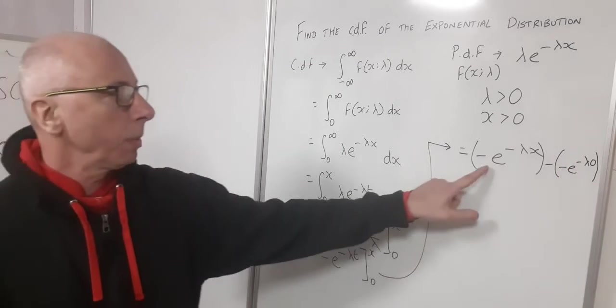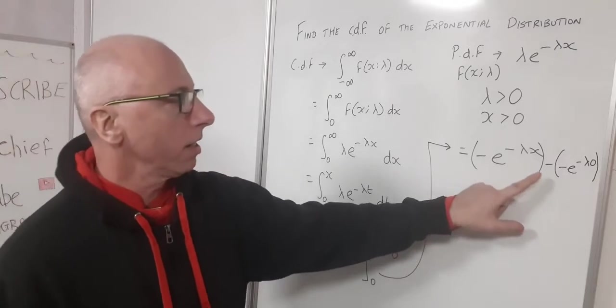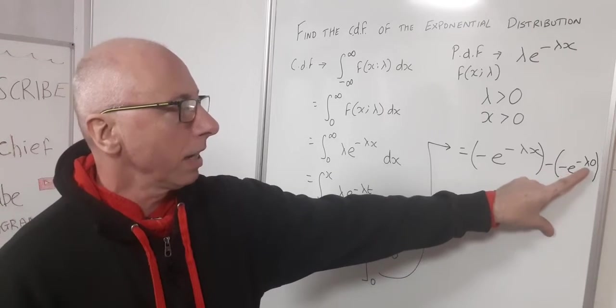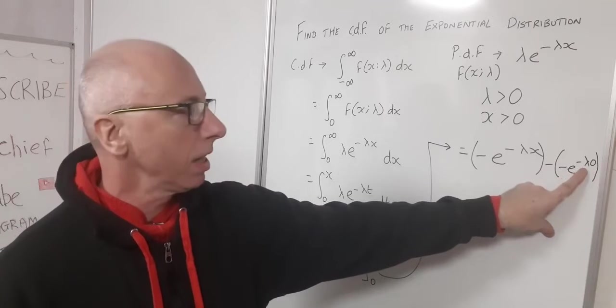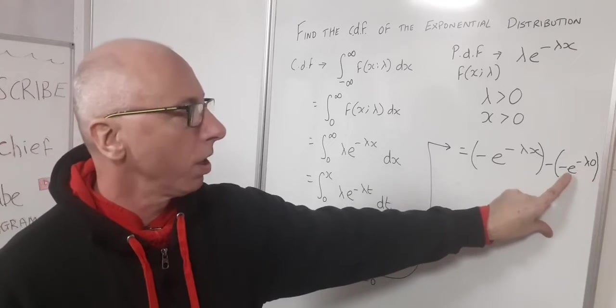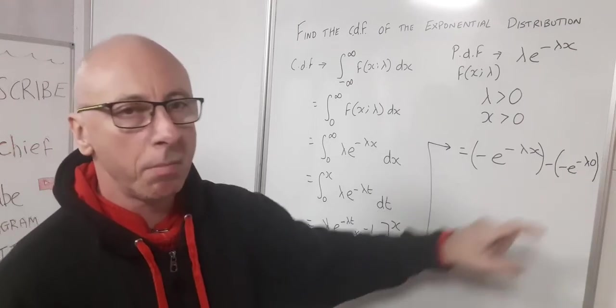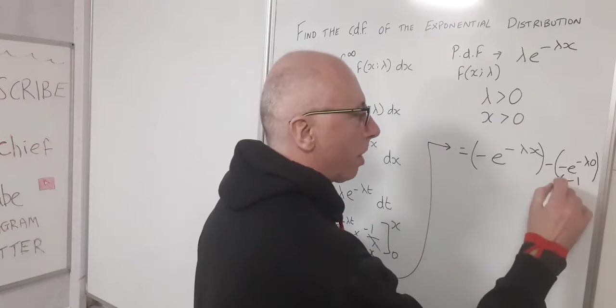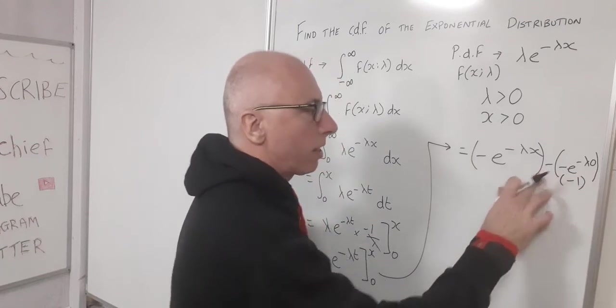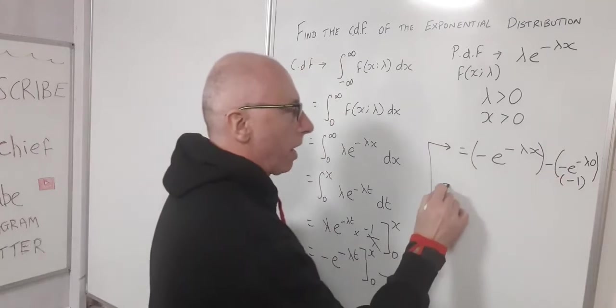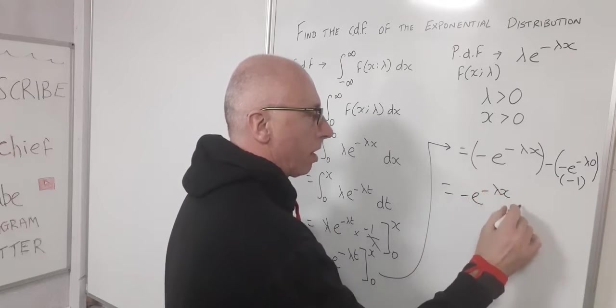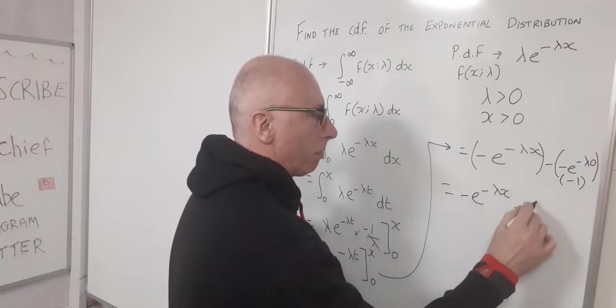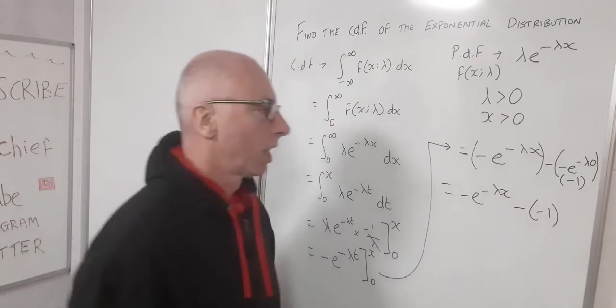Okay, now this bit here is fine as it is. But this bit here is just basically lambda times zero is zero. And e to the minus zero is the same as e to the zero. So this is just minus one, because e to the zero is one. So we've got minus one here. And then with the minus here, we're just now left with minus e to the negative lambda x minus minus one.